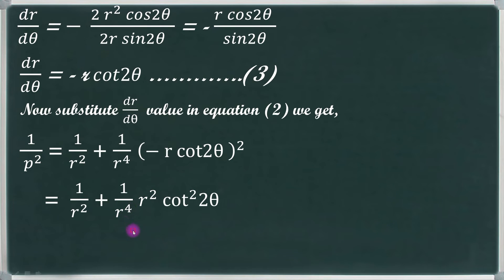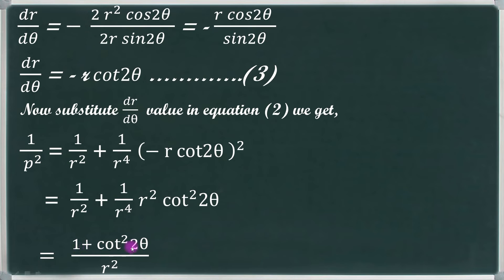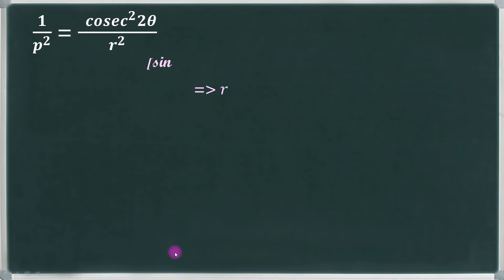After simplification, the r squared terms cancel in the denominator. We use the identity 1 + cot² 2θ = cosec² 2θ, so the expression simplifies to 1/p² equals cosec² 2θ divided by r squared.